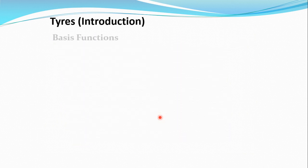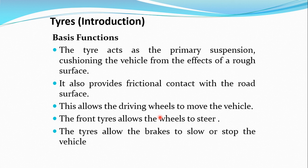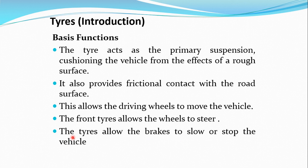The basic functions of the Tyre are: first, it acts as a primary suspension — providing a cushioning effect and working smoothly on rough surfaces. Second, it provides frictional contact between the road and the tyre surface. Third, it allows the driving wheel to move the vehicle via traction force due to friction. Fourth, the front tyre allows the wheel to steer during cornering. And finally, it allows slowing down the vehicle during braking or retardation.